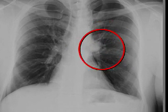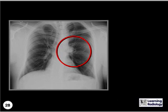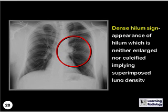What is the name of this sign? This is the dense hilum sign, which is the appearance of the hilum, which is neither enlarged itself nor calcified, implying there is something superimposed on it in the lung.